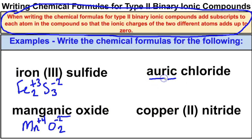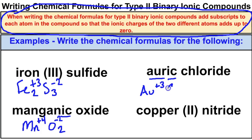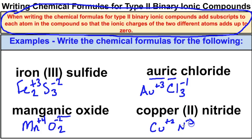For auric chloride — the common name, referring to gold — gold has a plus 3 charge, and chloride is negative 1, so you need three chlorides. For copper 2 nitride, copper is plus 2 and nitride is N minus 3, so you need three copper ions and two nitride ions for the charges to add up to 0.